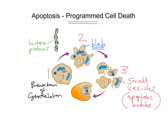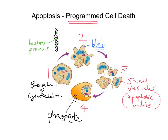In step four, we can see that one of these vesicles has been engulfed by a neighbouring cell — a phagocyte, which is a type of white blood cell. These small vesicles are taken up by a process known as phagocytosis. The phagocyte wraps around and envelops the vesicle, engulfing it. The debris is disposed of quickly, causing no damage to the surrounding tissue — in contrast to necrosis, which does cause such damage.